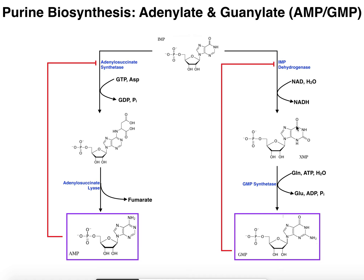XMP doesn't really do anything else on its own, so it's just an intermediate in this pathway. It's going to get consumed immediately by GMP synthetase, which hydrolyzes the nitrogen off of the R group of glutamine and attaches that to this carbon where we originally had the carbonyl. We now have an NH2 nitrogen there. That requires ATP hydrolysis to ADP and phosphate, and the glutamine being hydrolyzed is left with glutamate. Ultimately, this gives us guanylate, or GMP, guanosine monophosphate.